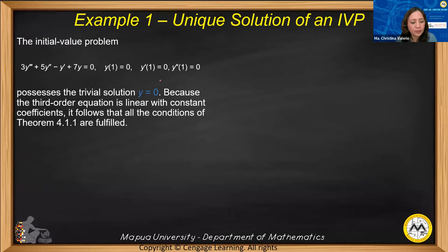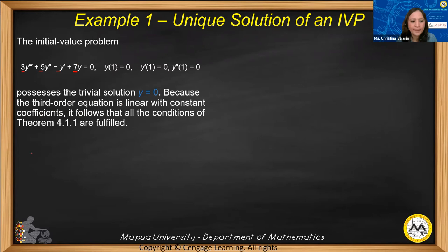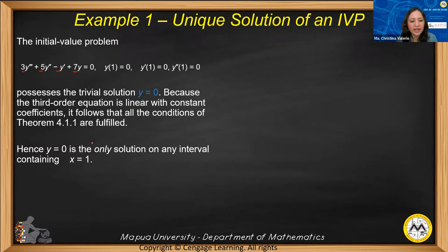You can check this yourself: if y = 0, then y' = 0, y'' = 0, and y''' = 0. When substituted into the differential equation, we have 3(0) + 5(0) - 0 + 7(0) = 0. Therefore y = 0 satisfies the equation. Also, because the third-order equation is linear, y, y', y'', and y''' are all first degree with constant coefficients, which are continuous functions. It follows that all conditions of Theorem 4.1.1 are fulfilled.